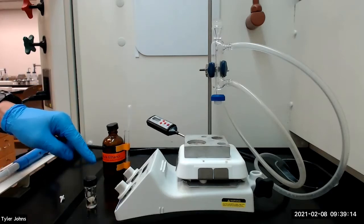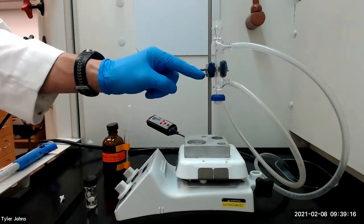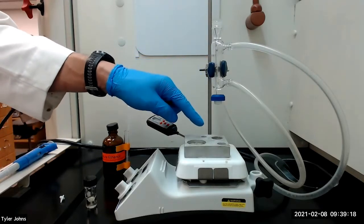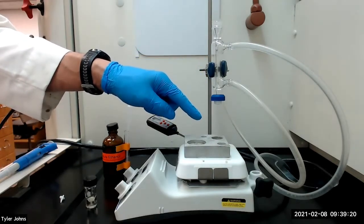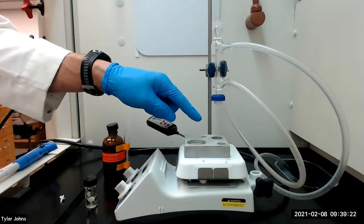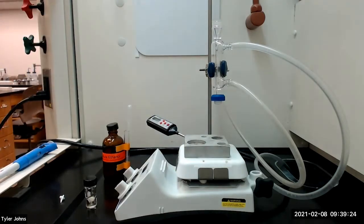We will then attach the conical vial to a water-cooled condenser and heat the vial on an aluminum block at approximately 80 degrees Celsius with stirring until the solids have dissolved.